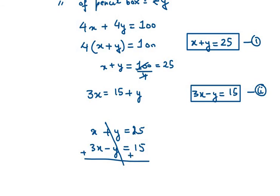We can clearly see that +y and -y are getting cancelled. Whenever there is plus and minus, you can simply add two equations. Here we have 3x + x as 4x, 25 + 15 is 40. x will be equal to 40 over 4, or you can write it as x equals 10.